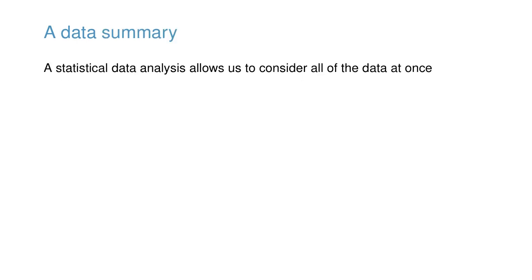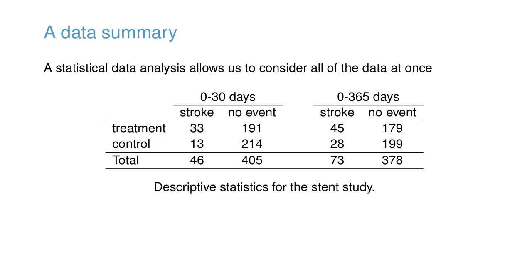Considering data from each patient individually would be a long, cumbersome path towards answering the original research question. Instead, performing a statistical data analysis allows us to consider all of the data at once. The table below summarizes the raw data in a more helpful way. For instance, to identify the number of patients in the treatment group who had a stroke within 30 days, we look on the left side of the table at the intersection of treatment and stroke: 33.